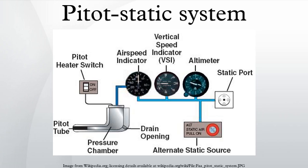When airspeed increases, the ram air pressure is increased, which can be translated by the airspeed indicator. The static pressure is obtained through a static port. The static port is most often a flush-mounted hole on the fuselage of an aircraft, and is located where it can access the airflow in a relatively undisturbed area.